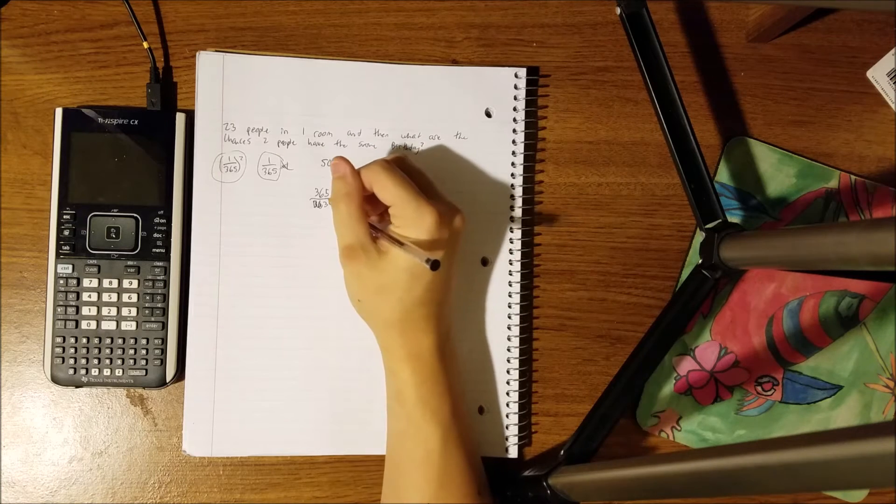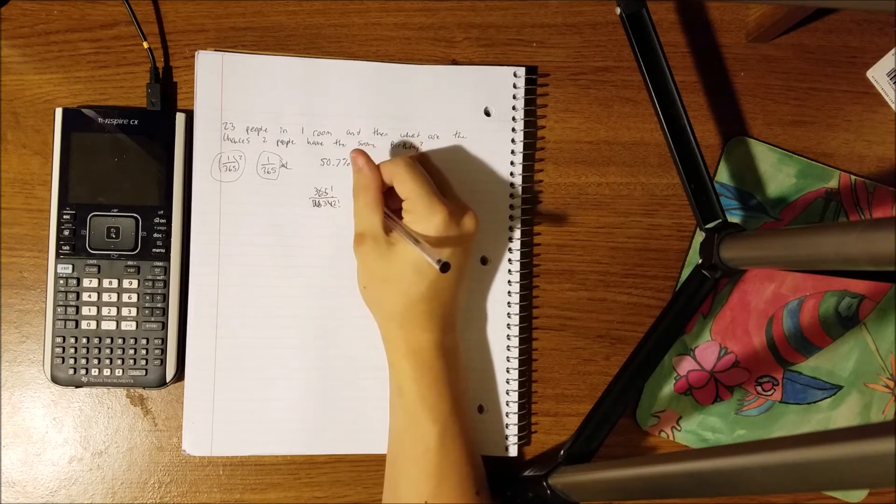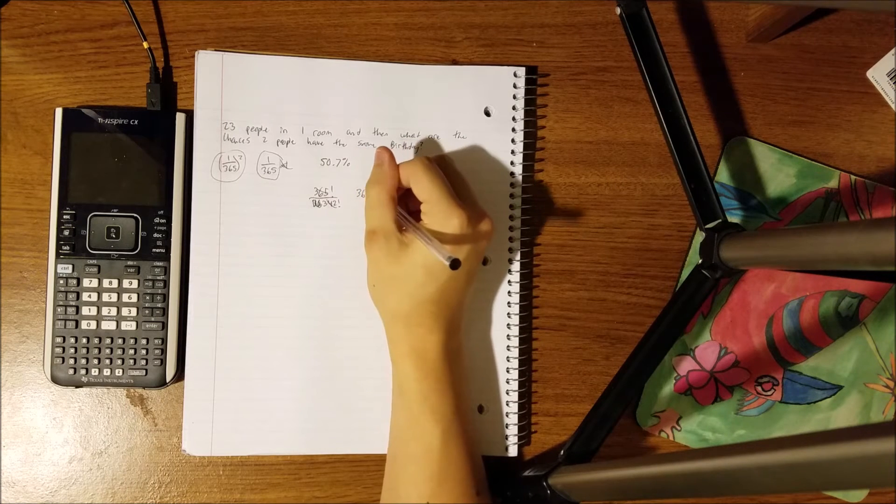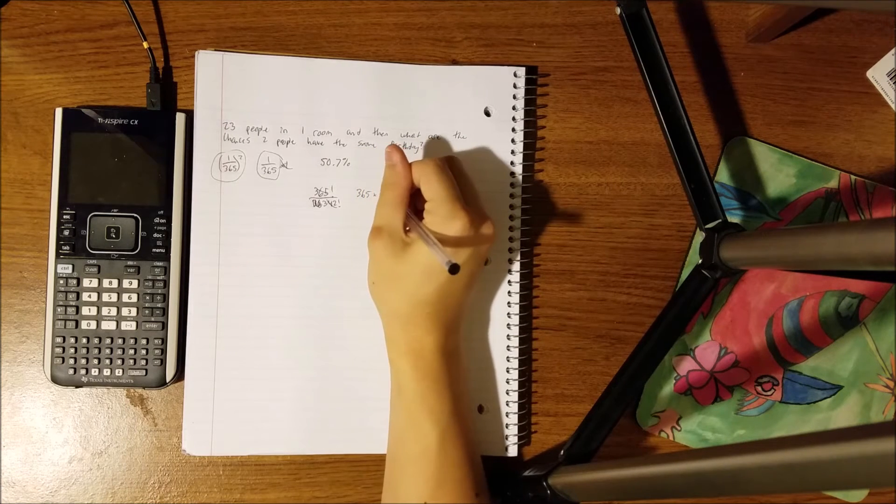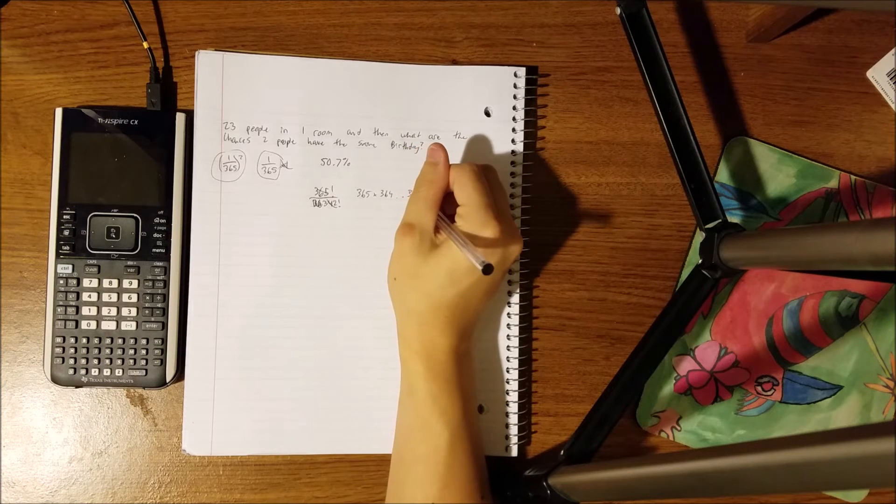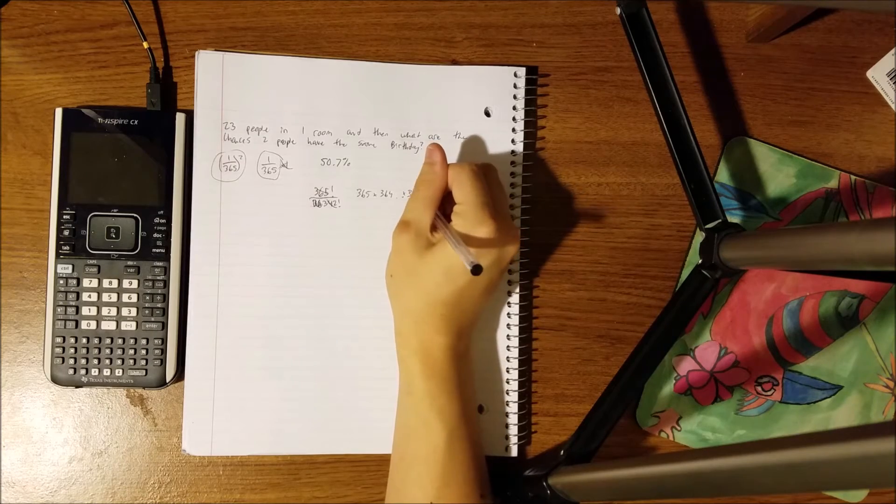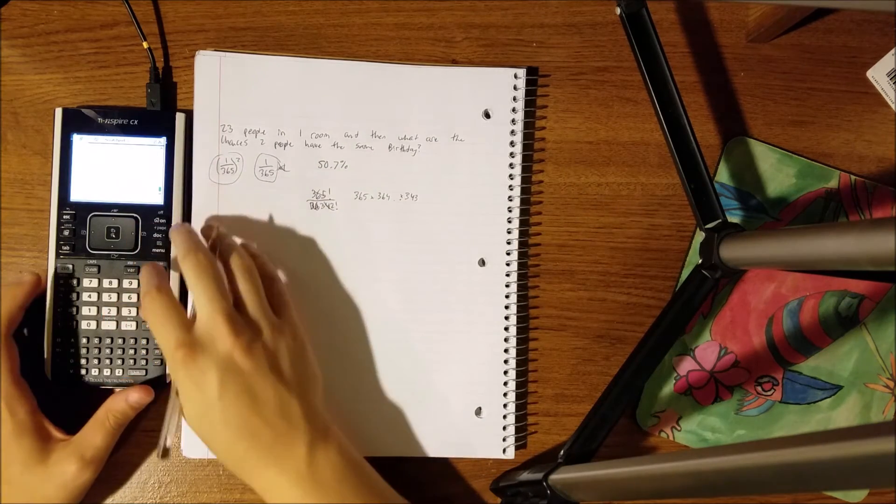so these are going to cancel out to make 365 times 364, all the way down to 343, so we'll do that on the calculator right now.